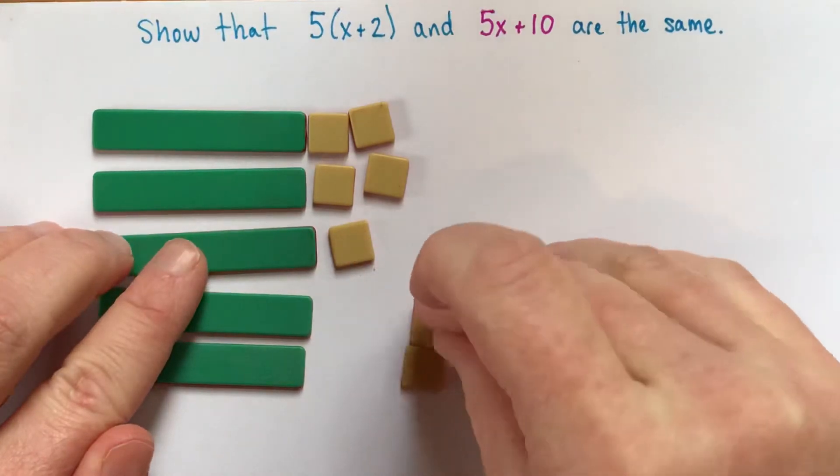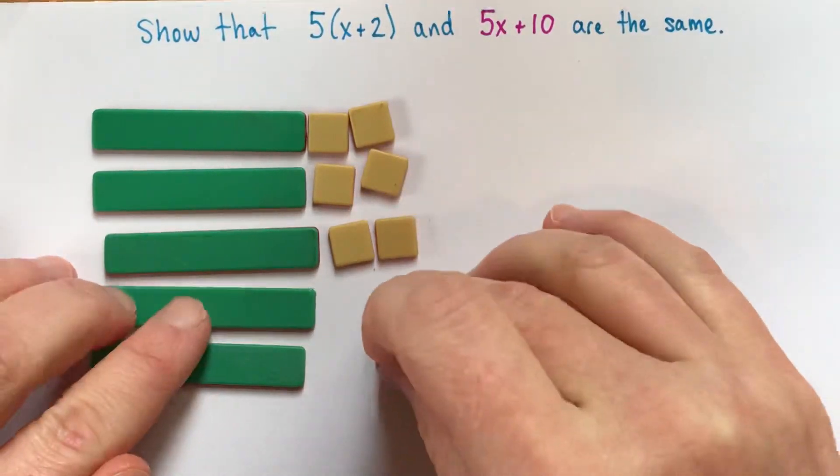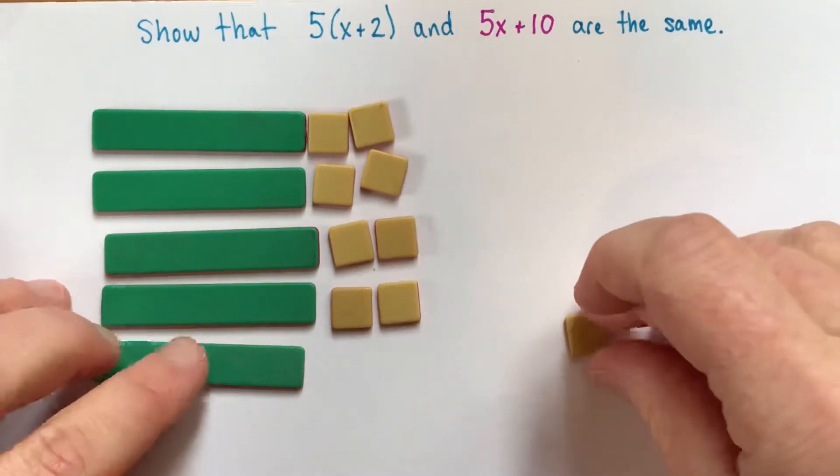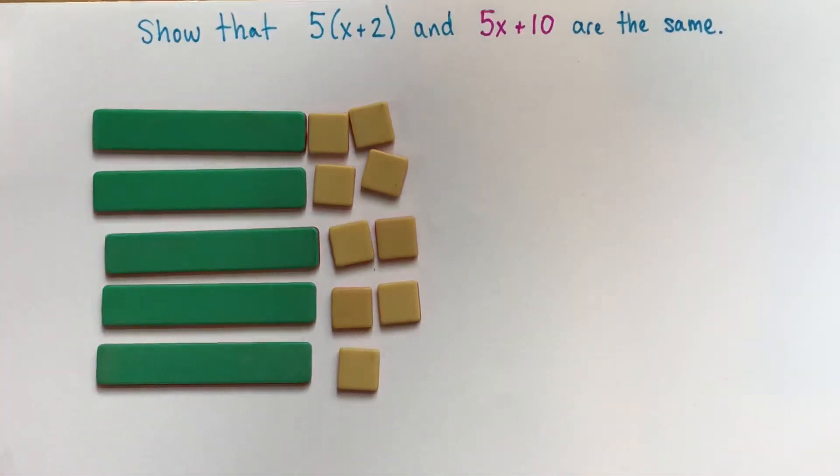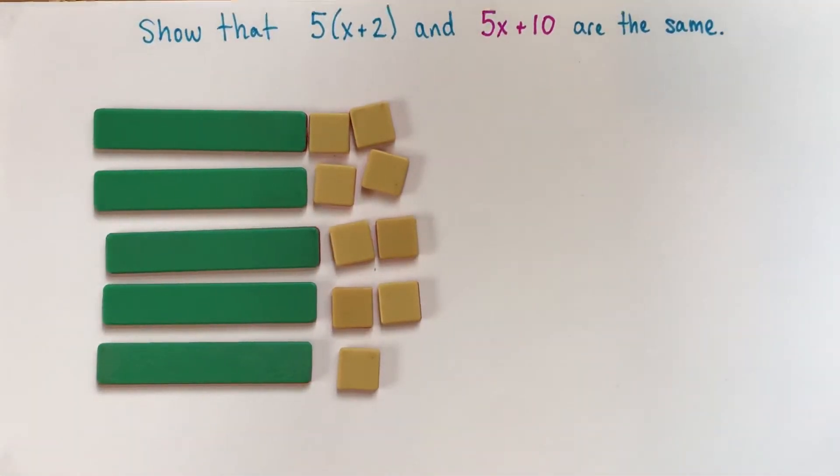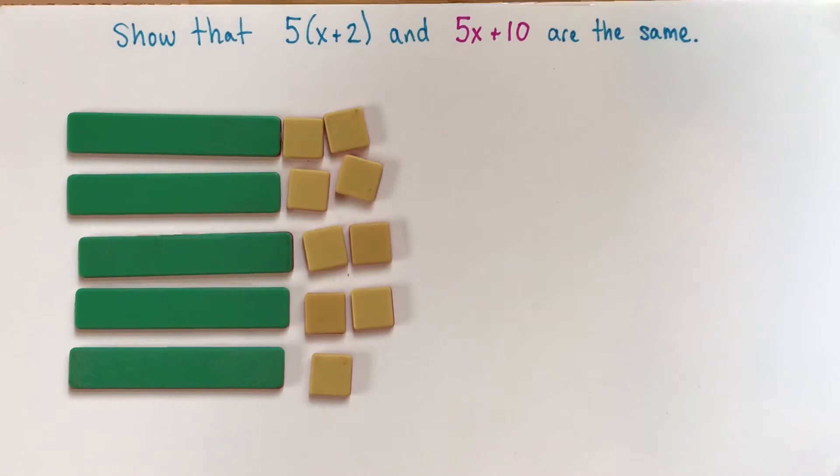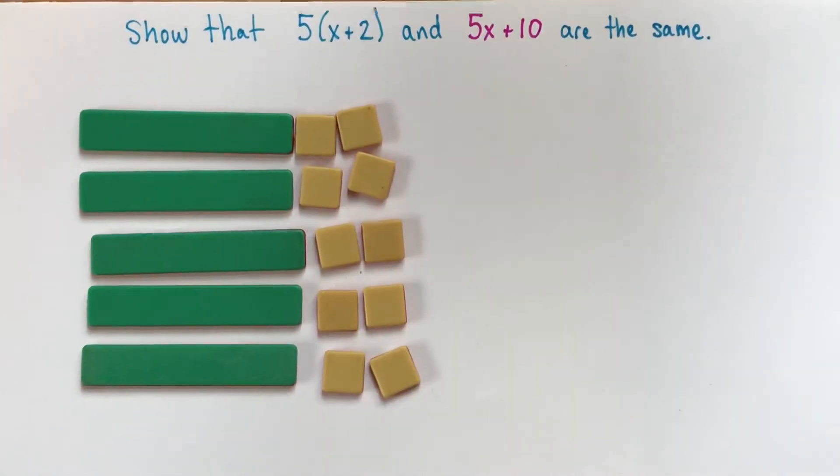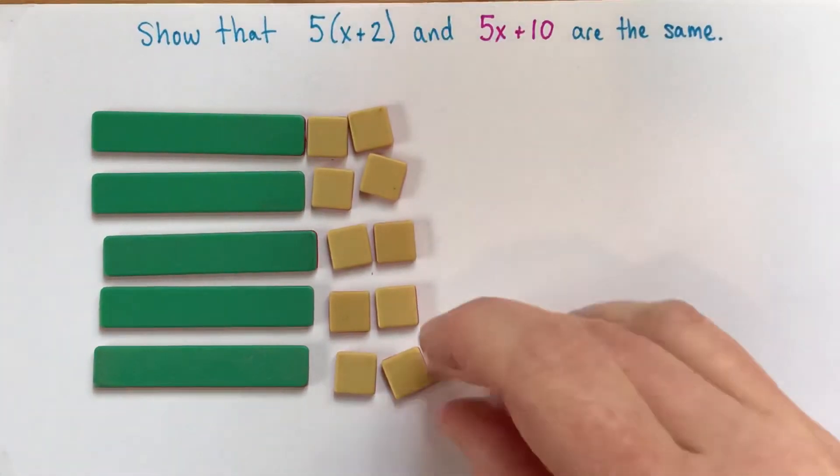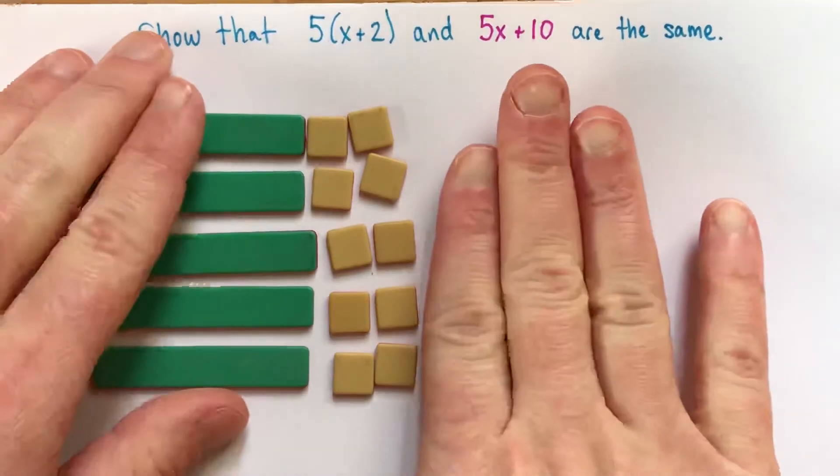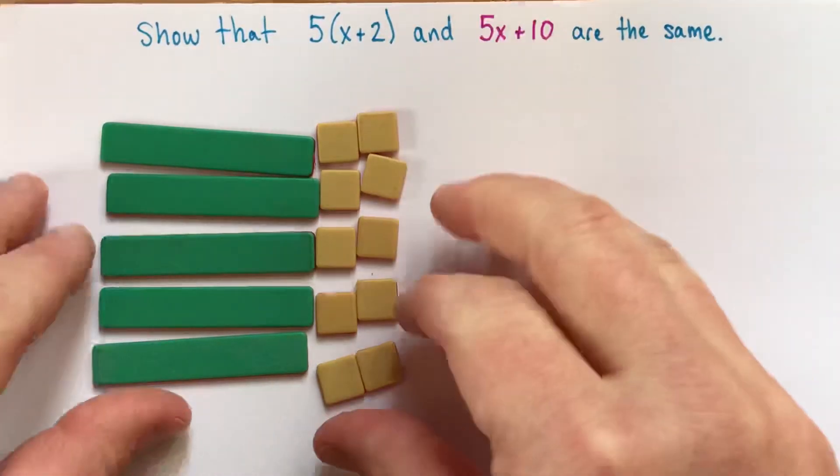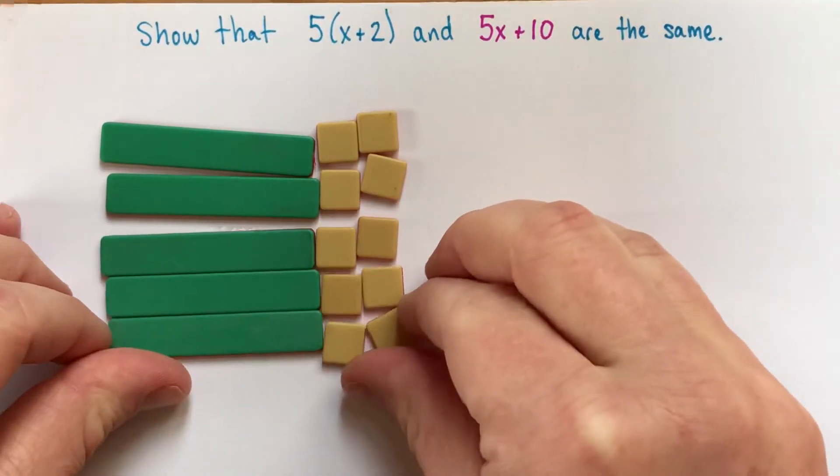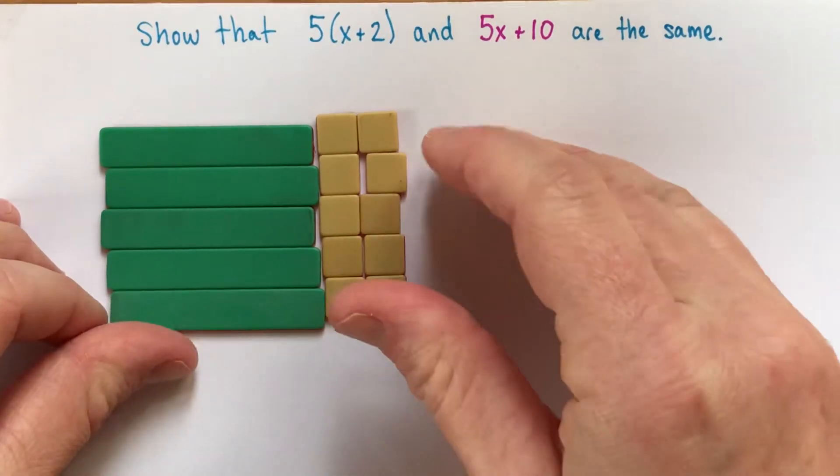So there's 3 groups of x plus 2, 4 groups of x plus 2... I'll just tidy things up by pushing it together. There.